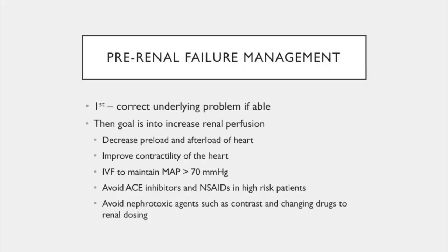In pre-renal states, first correct the underlying problem. The goal is to increase renal perfusion by decreasing preload and afterload of the heart, improving contractility, and giving IV fluids to maintain mean arterial pressure greater than 70 mmHg. Avoid ACE inhibitors and NSAIDs in high-risk patients, avoid nephrotoxic agents such as contrast, and change drugs to renal dosing, as many renally-excreted drugs at normal doses become nephrotoxic in renal failure.